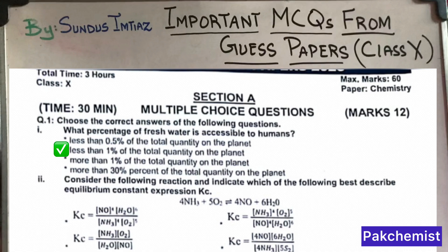MCQ number 2 says: Consider the following reaction and indicate which of the following best describes the equilibrium constant expression. Here I have a question — I have to identify how to write it in KC, the K formula according to it, which way it will be written. The answer is B.